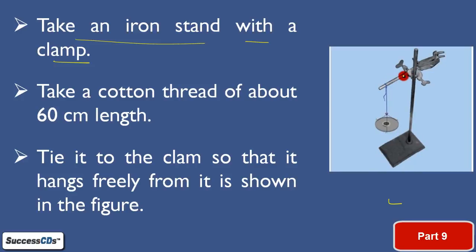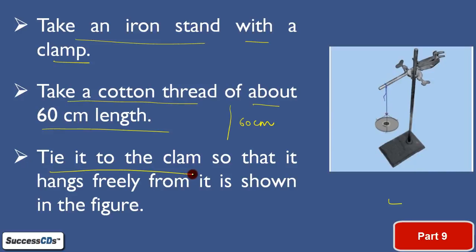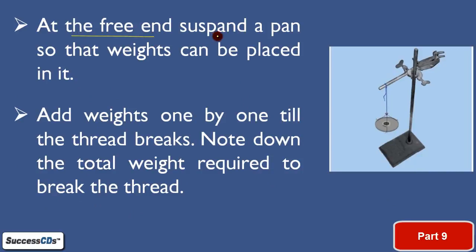Next step is take a cotton thread of about 60 centimeters in length, so that the weights can be placed on it and it hangs freely from the clamp as shown in the figure. Us thread ko clamp se is tarike se tang karna hai ke woh freely suspend ho jaye. Then, at the free end, suspend a pan so that the weights can be placed in it. The pan is the place where we can keep the weights.